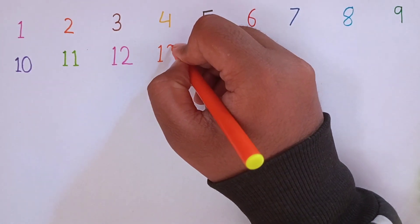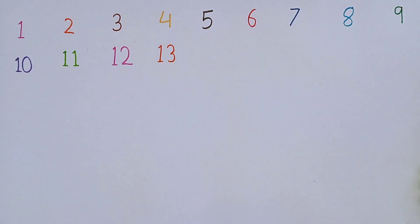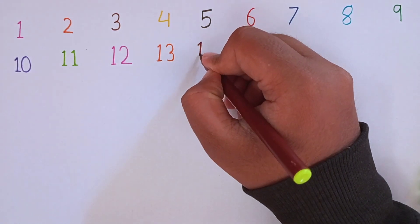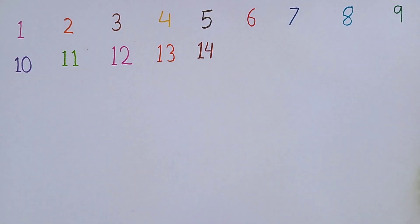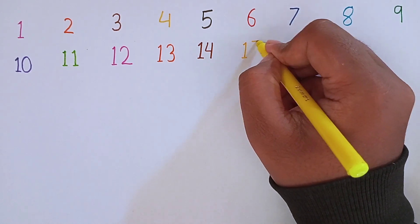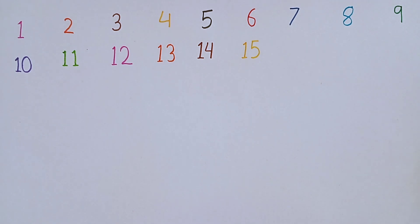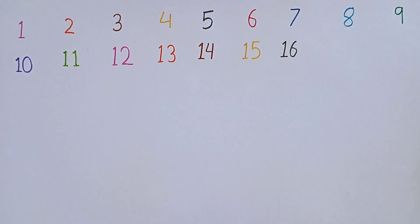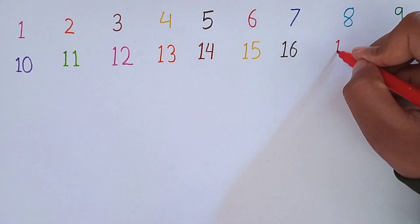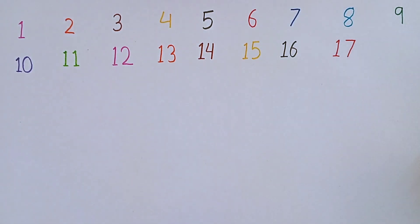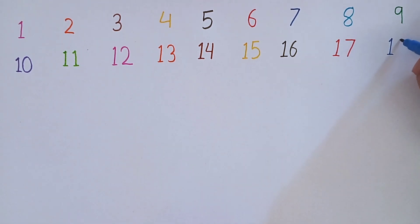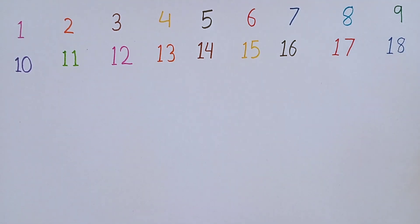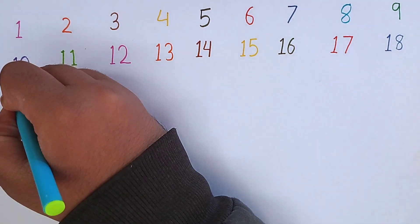After 12, the next number will be 13. 1, 3 — 13. This is 13. Next will be 14. 1, 4 — 14. This is 14. After 14, the next number will be 15. After 15 is 16. 1, 6 — 16. This is 16. After 16, I am going to write 17. 1, 7 — 17. After 17, I am going to write 18. 1, 8 — 18. Remember kids: 10, 11, 12, 13, 14, 15, 16, 17, 18.